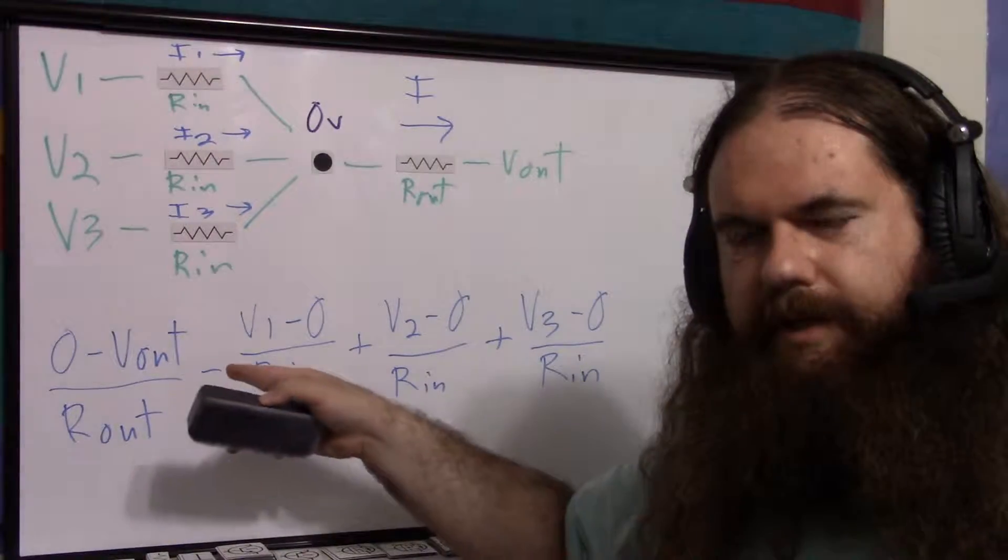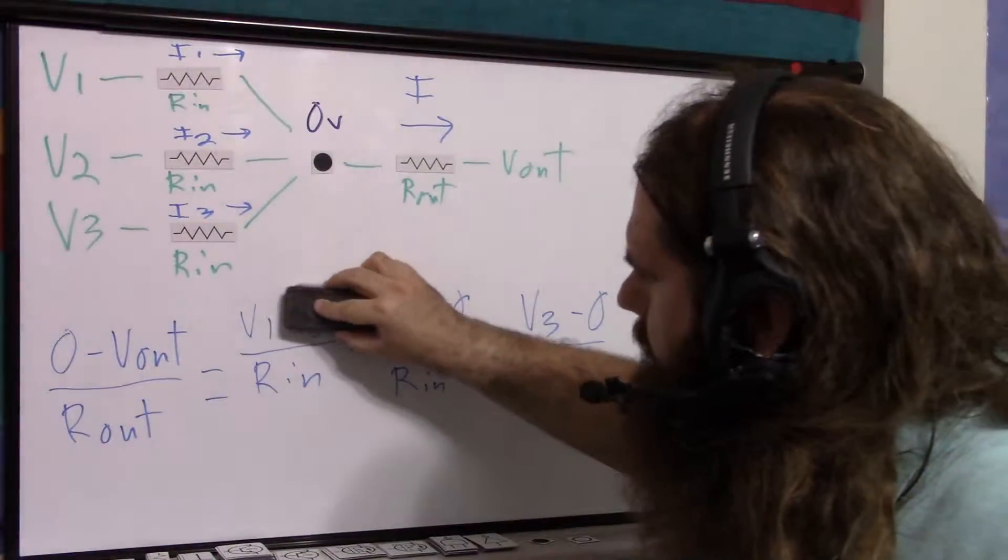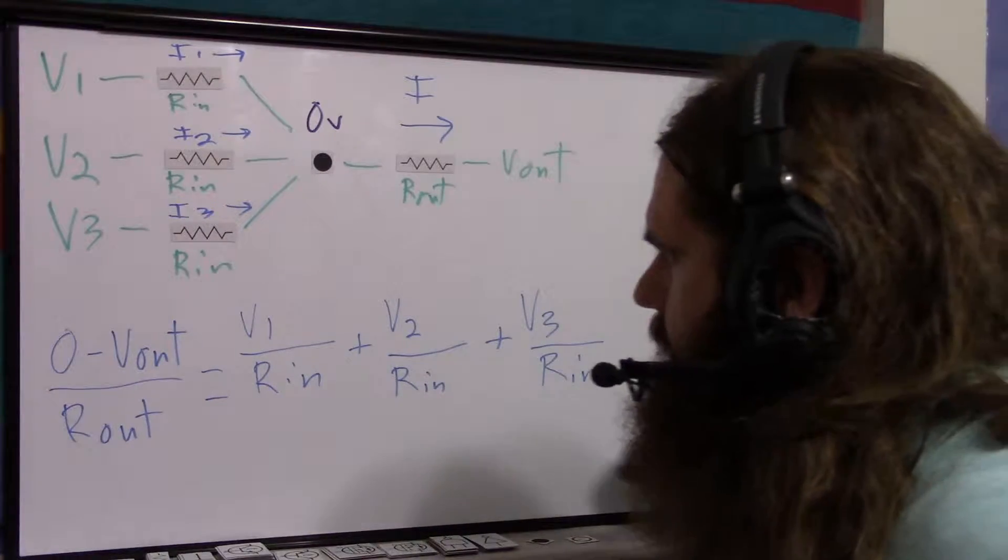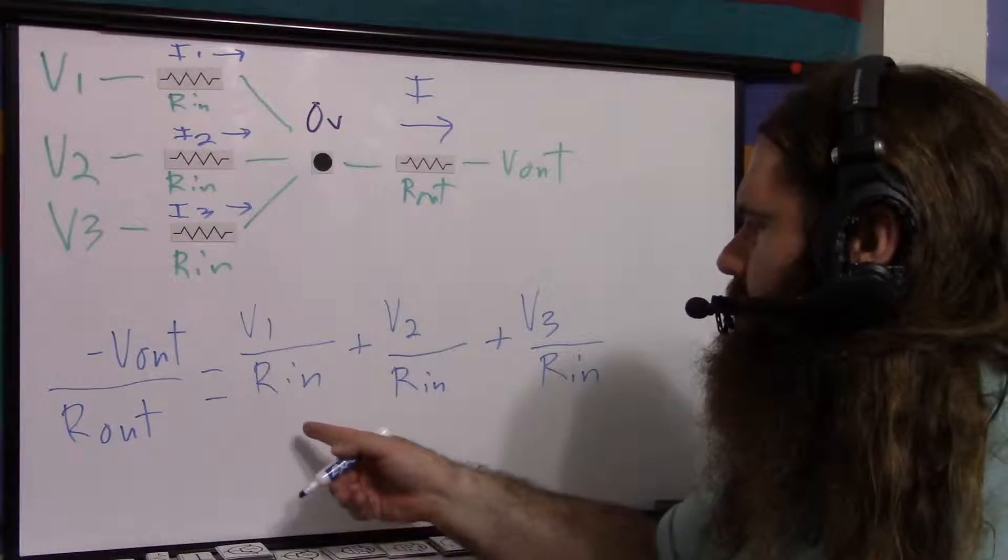So all of these something minus 0 just becomes that thing. And then 0 minus V out is negative V out. But now, look at what we have.